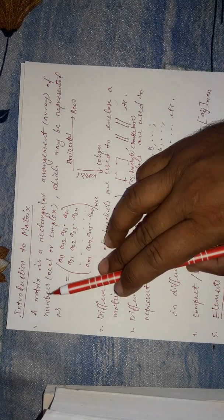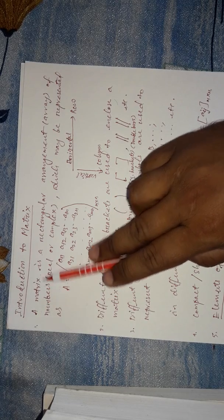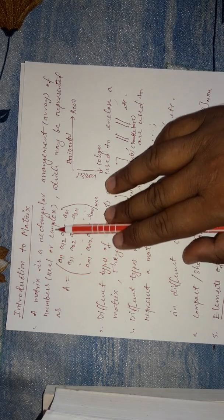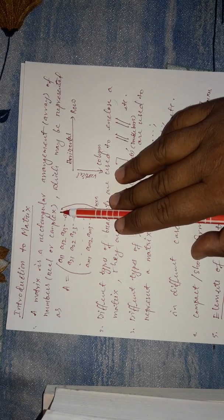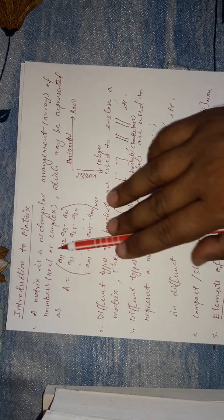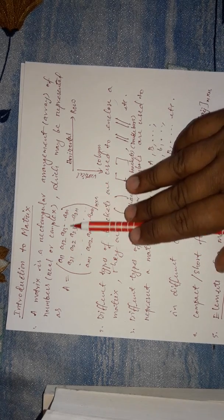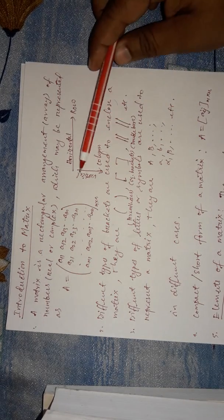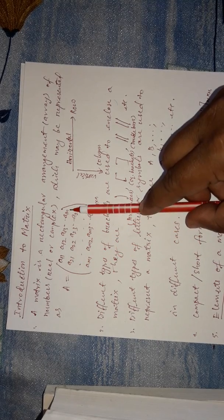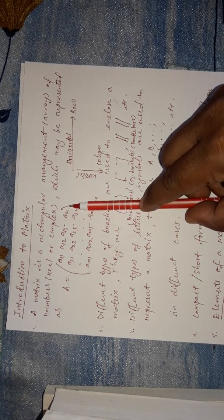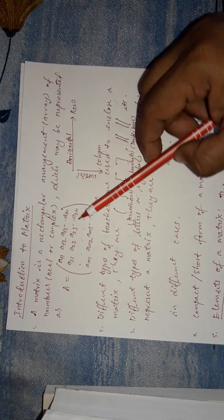As you can see in this note, a matrix is a rectangular arrangement — shortly called an array — of numbers. These numbers can be real or complex, and sometimes they can be symbols also. This arrangement of numbers will be either in the horizontal way or in the vertical way. The horizontal representation is called a row and the vertical representation is called a column.